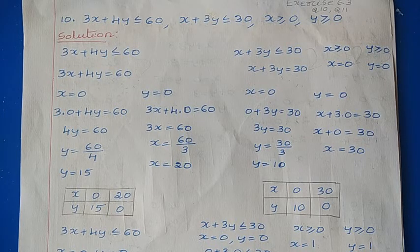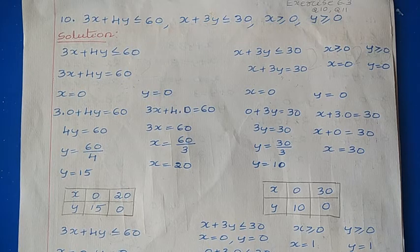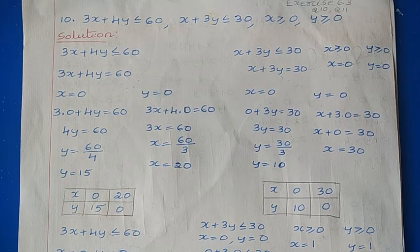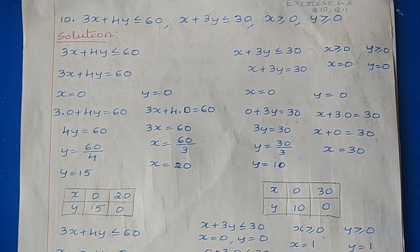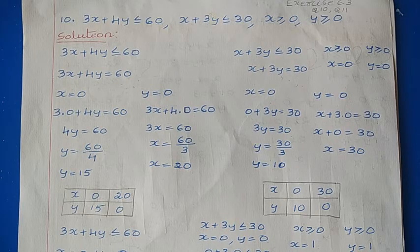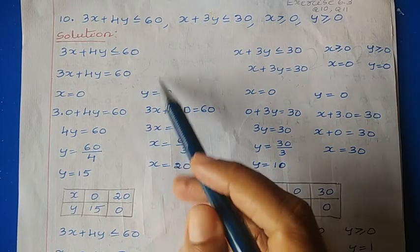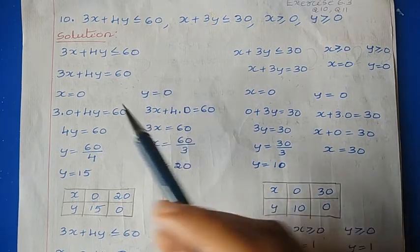Hi, in this video I am going to explain question number 10 and 11, exercise 6.3, chapter 6, linear inequalities. Question number 10: 3x plus 4y less than or equal to 60, x plus 3y less than or equal to 30, x greater than or equal to 0, y greater than or equal to 0. Here they have given 4 inequalities. Now let us take each inequality one by one and find the solution.